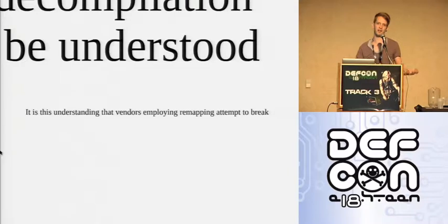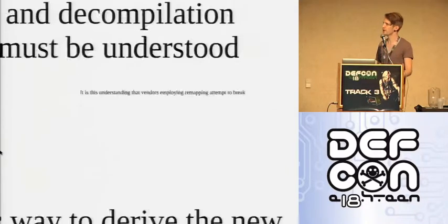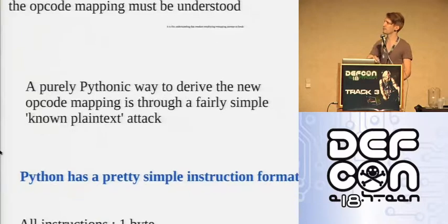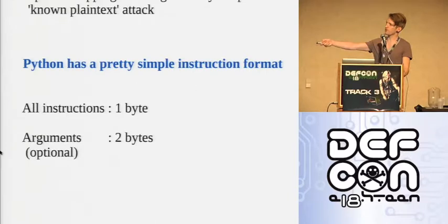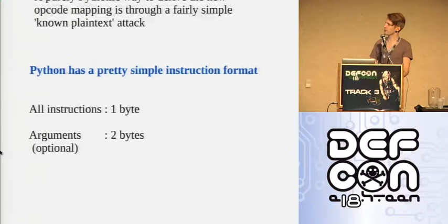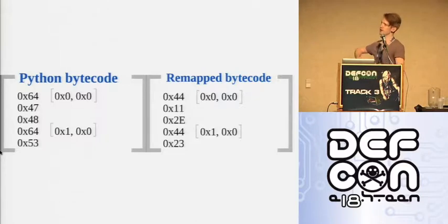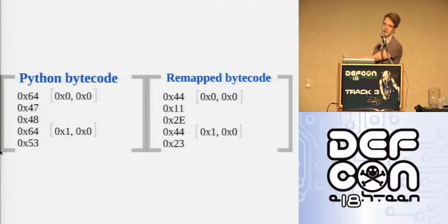We need an understanding of the opcode mapping to make sense of the byte stream — this is what vendors assume they've broken. But there's a pretty easy way to recover the new opcode mapping: a known-plaintext attack against the compiler. If we take a known set of .py files and compile them into bytecode for standard Python, then compile them into bytecode for the obfuscated Python using the obfuscated runtime, we get two byte streams we can diff to find all the opcode shifts.